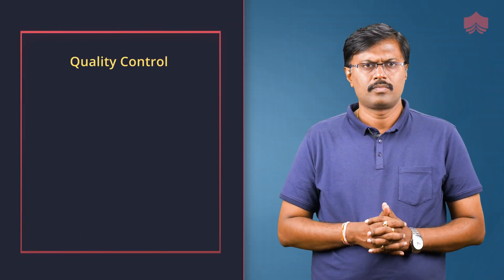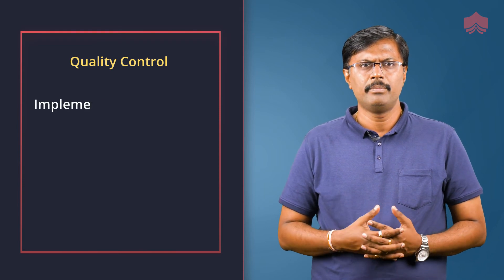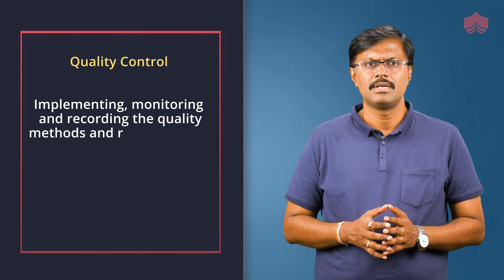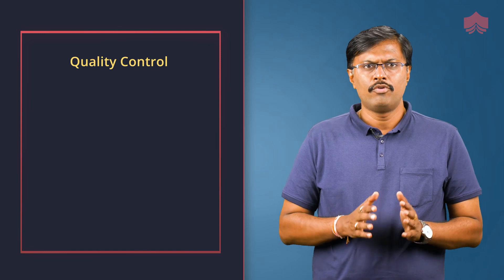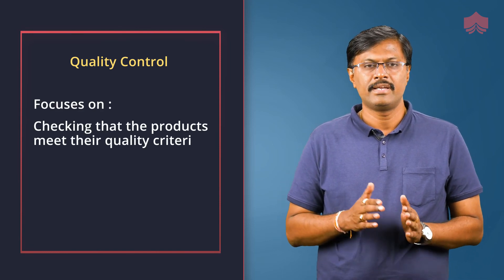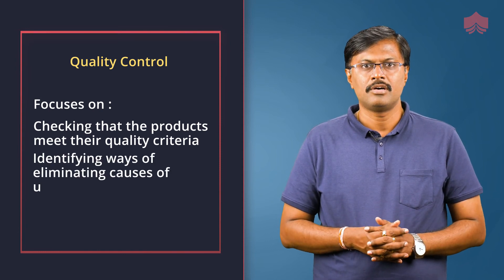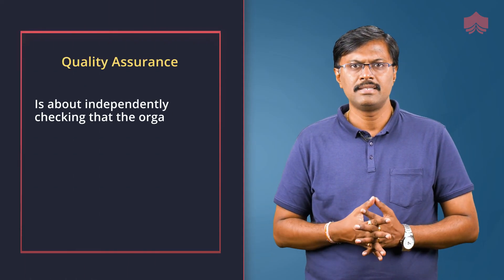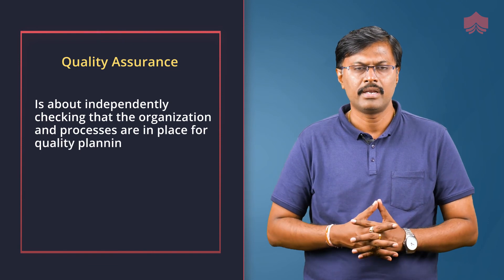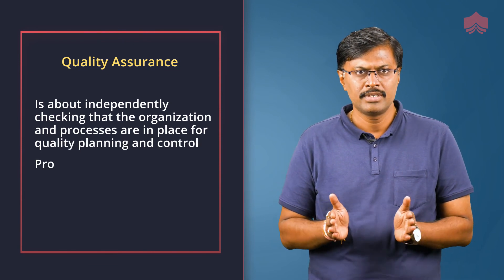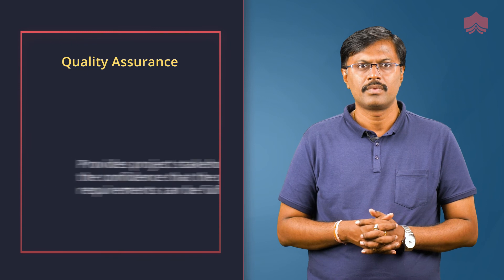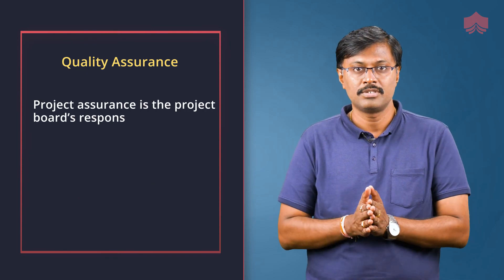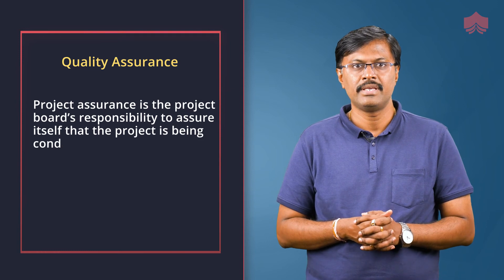Quality control refers to implementing, monitoring, and recording the quality methods and responsibilities defined in the quality management approach and product descriptions. It focuses on checking that the products meet their quality criteria and identifying ways of eliminating causes of unsatisfactory performance. Quality assurance is about independently checking that the organization and processes are in place for quality planning and control. Quality assurance provides project stakeholders the confidence that the quality requirements can be fulfilled. Project assurance is the project board's responsibility to assure itself that the project is being conducted correctly.